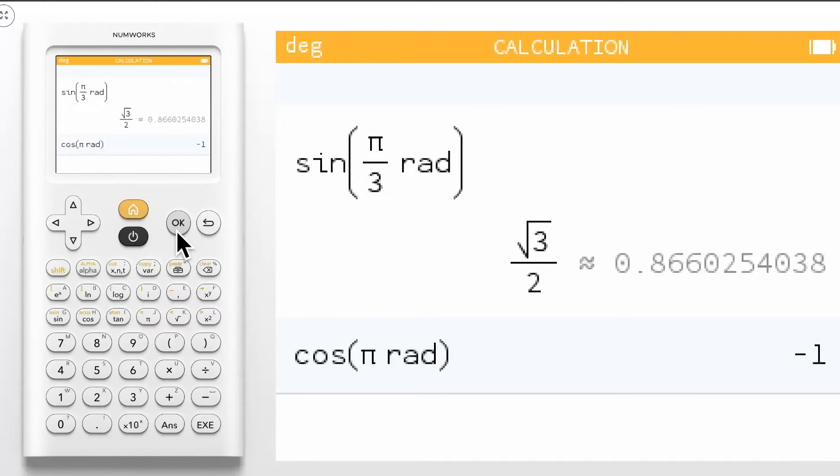NumWorks will also add a unit indicator when evaluating a trig expression when what you are typing may not be correct. For example,